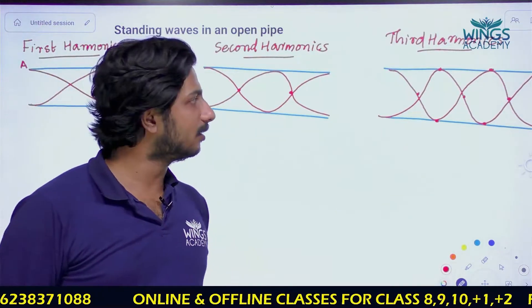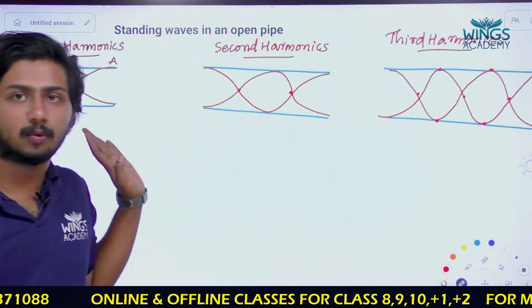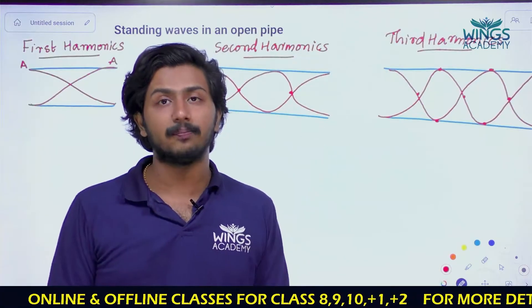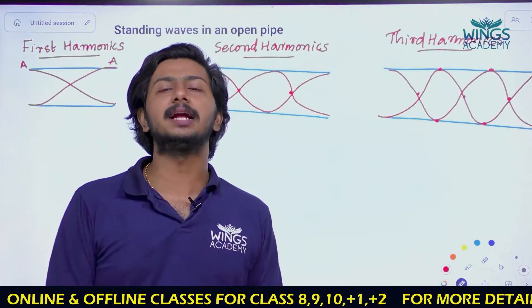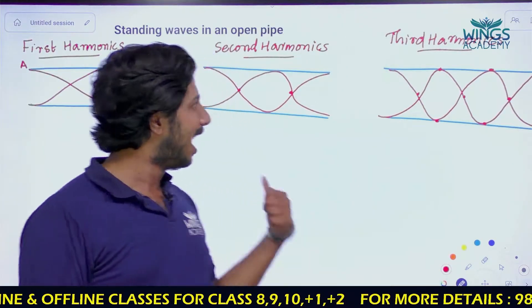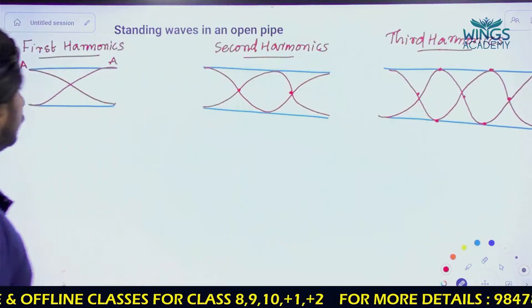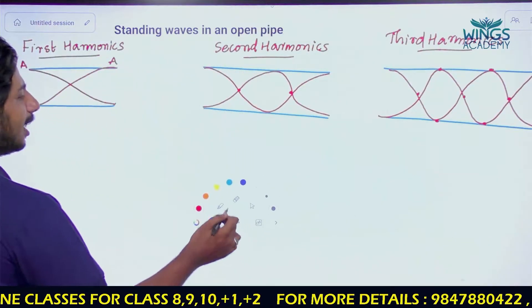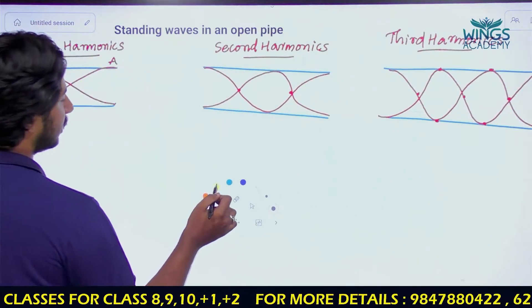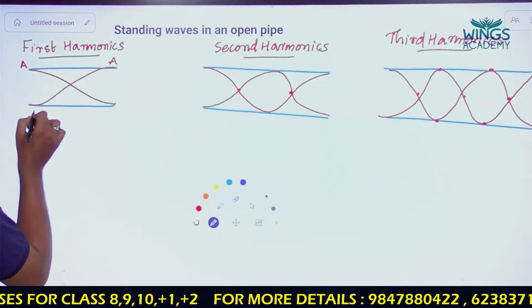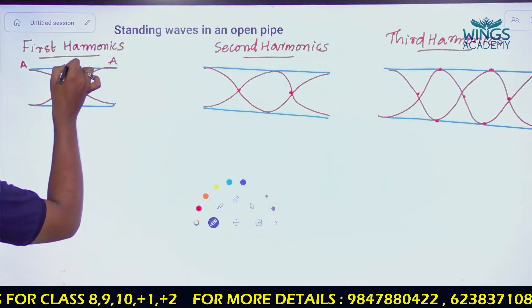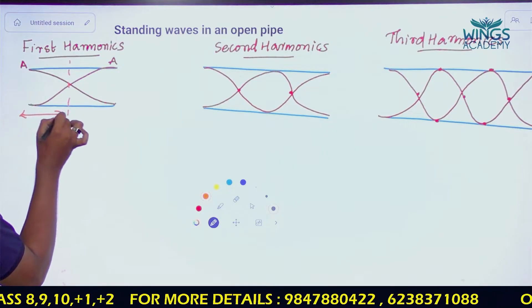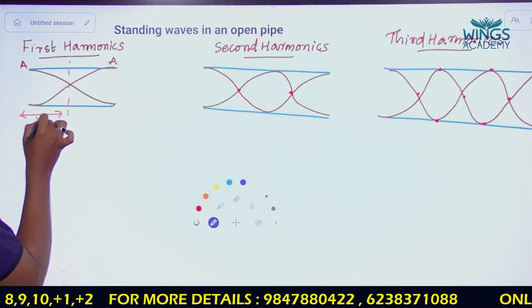Okay — second harmonics, third harmonics, looking at the figure. Now what we are looking at in this derivation: that's the first harmonics. We are going to close the pipe — that's the second harmonics. How many questions are there? This question involves lambda by 4.